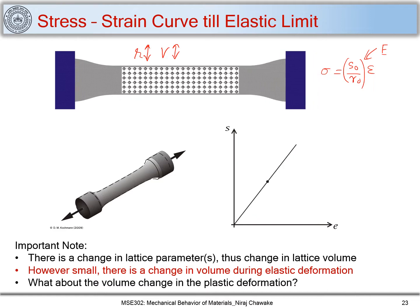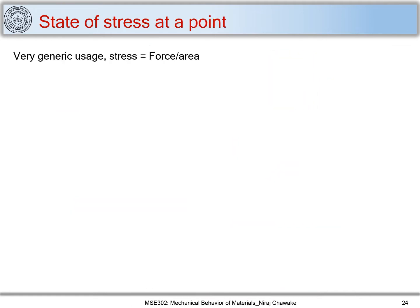Now let's understand the state of stress at a point. I have initially told you that very generic usage of stress is force upon area. But the question arises, when I see a stress subjected to a material or a sample, will this stress remain constant or uniform throughout at every point in the sample? Is the state of stress same throughout the deforming body? That's the question.